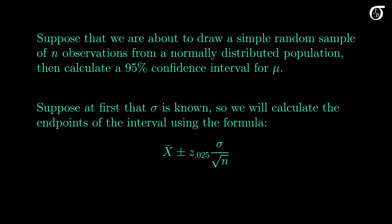Here are the details of the question. Suppose that we are about to draw a simple random sample of n observations from a normally distributed population, then calculate a 95% confidence interval for mu. We're going to suppose at first that sigma is known, so we will calculate the endpoints of the interval using the formula x bar plus and minus z sub alpha over 2 times sigma over the square root of n. We could do these calculations when sigma is unknown, using t rather than z, but it's a bit more complicated and I'm using z as it gets us to essentially the same conclusion a little more simply. Recall that the appropriate z value for a 95% interval is 1.96. I'll talk about t after.